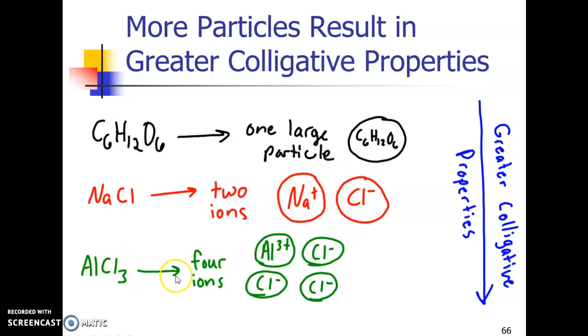And then aluminum chloride, when it dissolves, well, it's an ionic compound too, and aluminum is plus three, chloride minus one each, there's three. So long story short, there's four ions here. So aluminum chloride, when dissolved in water, would have four times the colligative properties of glucose if they were at the same molal concentration.